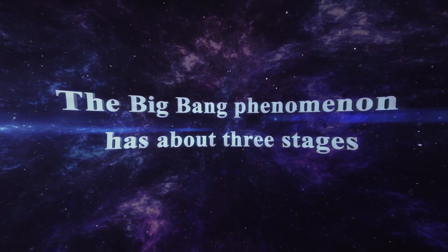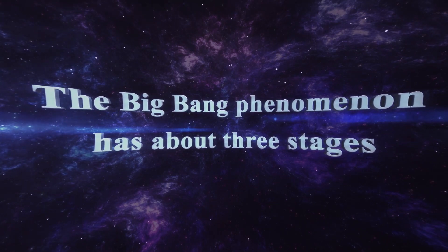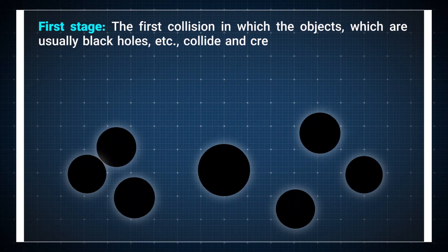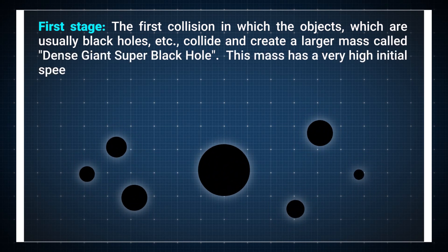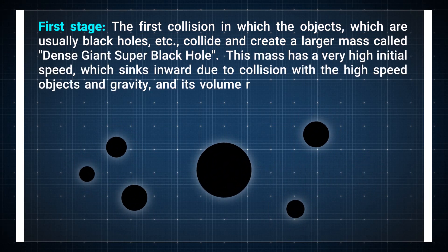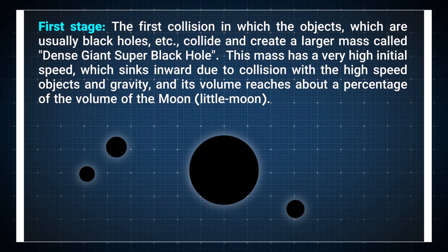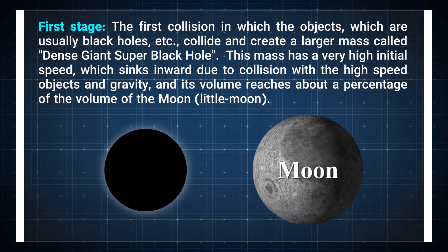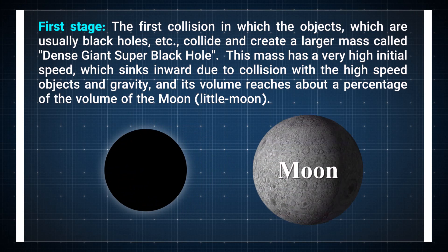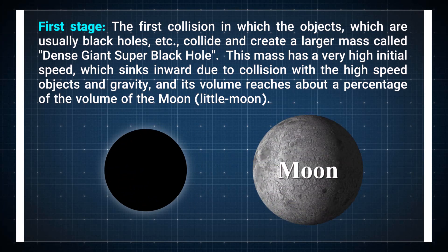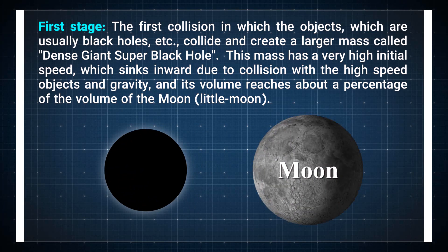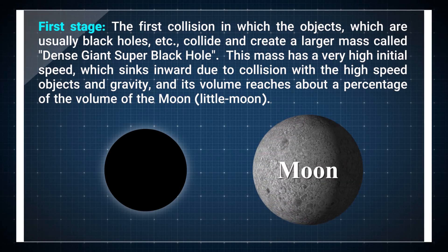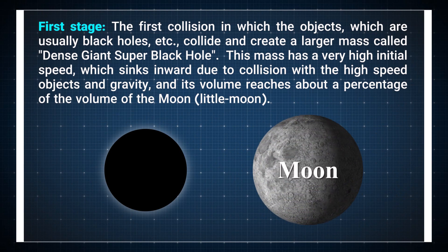The Big Bang phenomenon has about three stages. First stage: the first collision in which the objects, which are usually black holes etc., collide and create a larger mass called dense giant super black hole. This mass has a very high initial speed which sinks inward due to collision with the high-speed objects and gravity, and its volume reaches about a percentage of the volume of the moon.